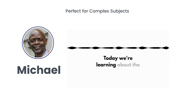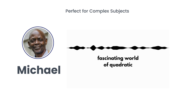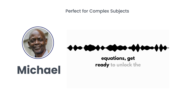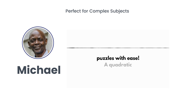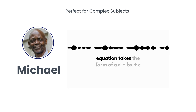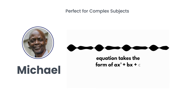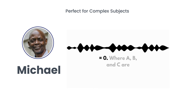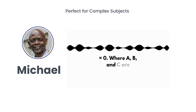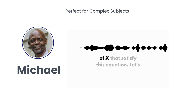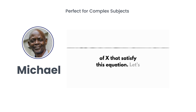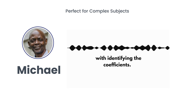Today, we're learning about the fascinating world of quadratic equations. Get ready to unlock the secrets of solving these mathematical puzzles with ease. A quadratic equation takes the form of AX squared plus BX plus C equals zero, where A, B, and C are constants. Our goal is to find the values of X that satisfy this equation. Let's break it down step by step, starting with identifying the coefficients.